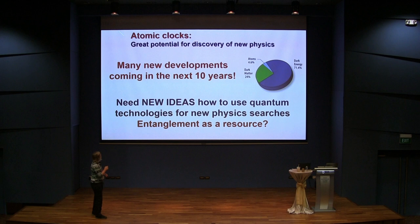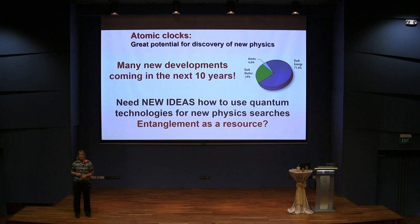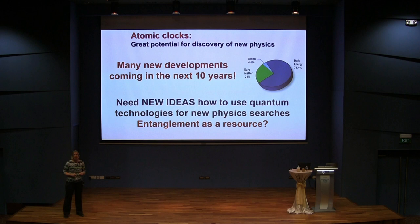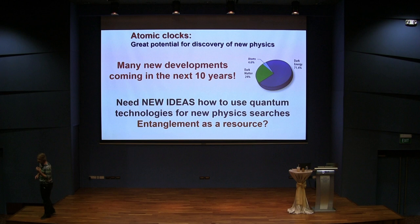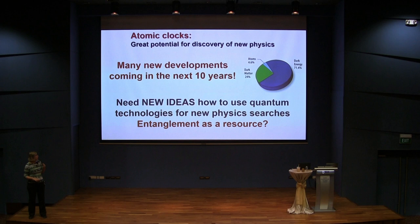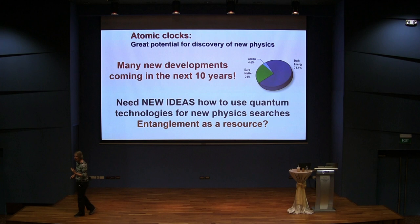To summarize: atomic clocks have great potential for discovering new physics. These are not only superb quantum sensors and metrology devices, but also dark matter search devices, tests of fundamental physics principles, and searches for new discoveries. Many exciting developments are coming in the next ten years. Especially for the Center for Quantum Technologies, I am very interested to hear more ideas — we need new ideas of how to use quantum technologies for new physics searches, for example how to use entanglement as a resource, and what quantum technologies we can use to improve the stability and precision of the clocks for these comparisons. Thank you so much for your attention.